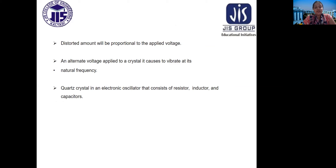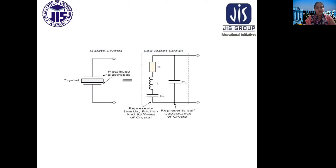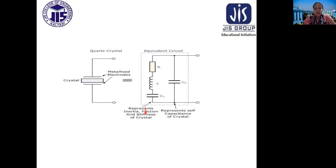A quartz crystal oscillator consists of a resistor, inductor, and capacitor. The crystal element is kept between metalized electrodes. The equivalent circuit is a combination of R, L, and C, representing inertia, friction, and stiffness of the crystal respectively. There is also a capacitor representing the self-capacitance of the crystal. The full equivalent circuit is a combination of R, L, C1, and C2, where both capacitors are known as coupling capacitors.